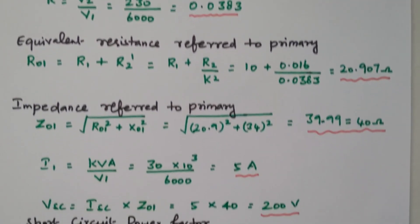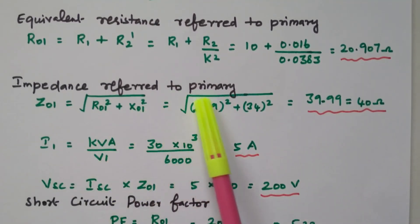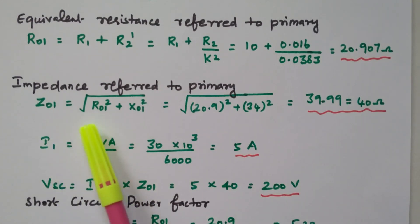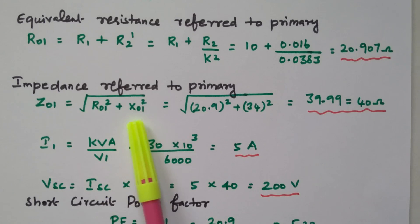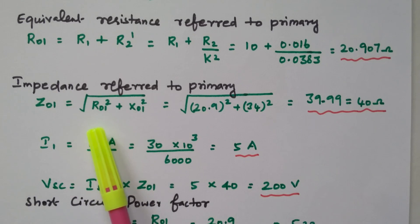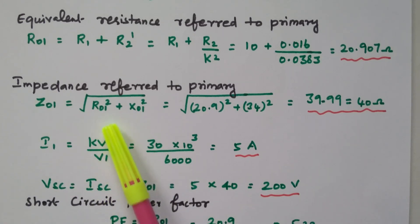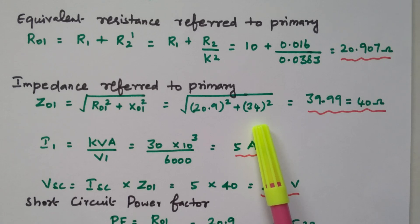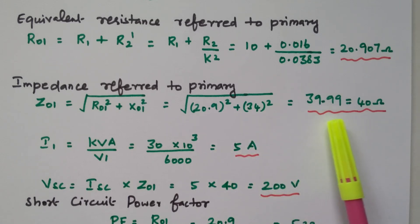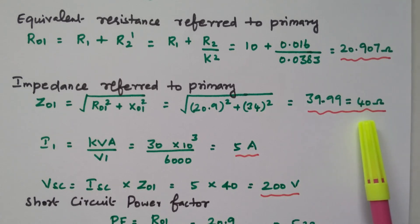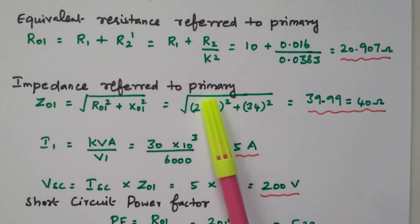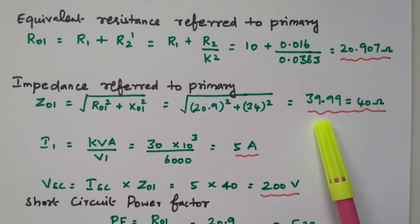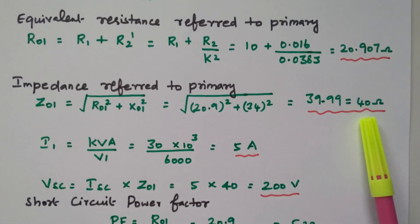Now we find the impedance referred to the primary. Z01 equals the square root of R01² plus X01². R01 is 20.907 and X01 is 34. Simplifying, we get 39.99, which is nearly equal to 40 ohm.